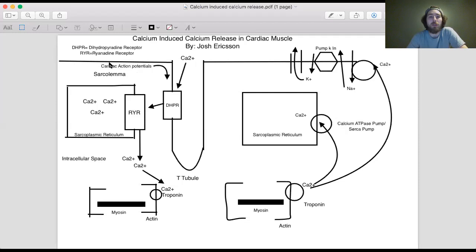Once these cardiac action potentials travel along the T-tubule and eventually get to the DHPR, which is the dihydropyridine receptor, that is a voltage-gated calcium channel. Once the action potentials reach it, it opens up and allows calcium to go into the dihydropyridine receptor.